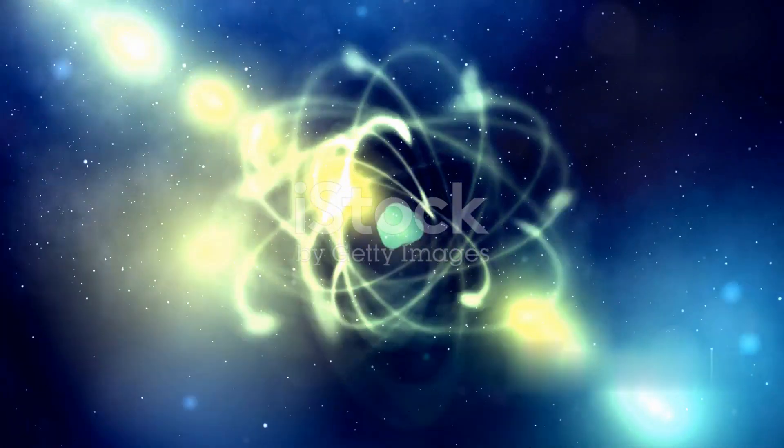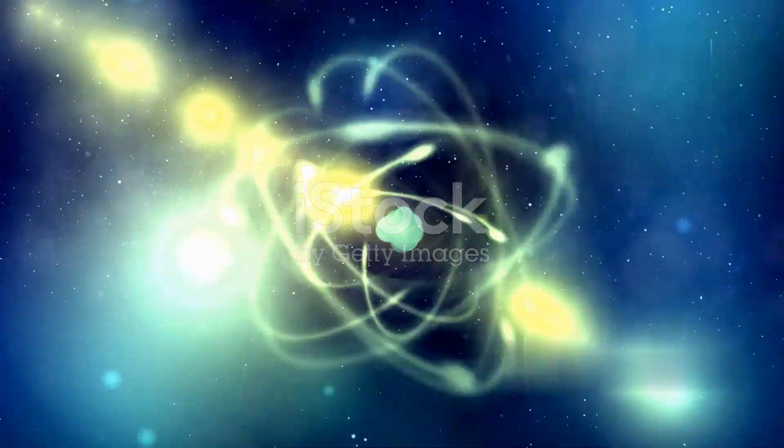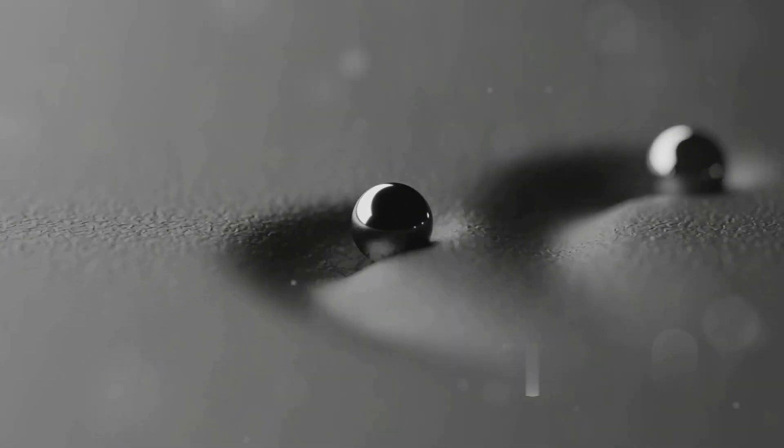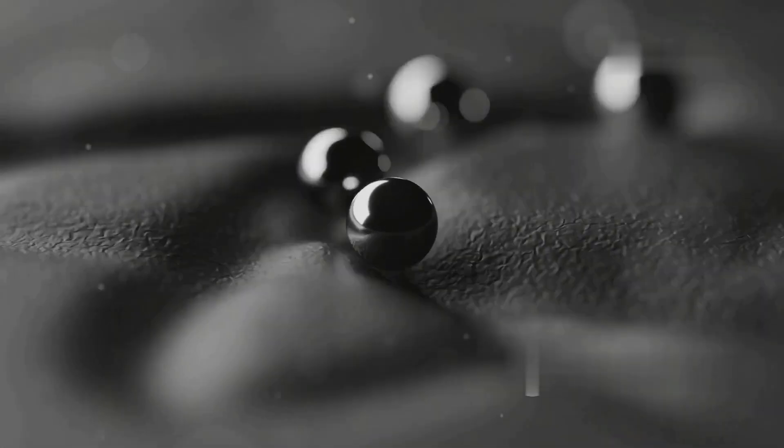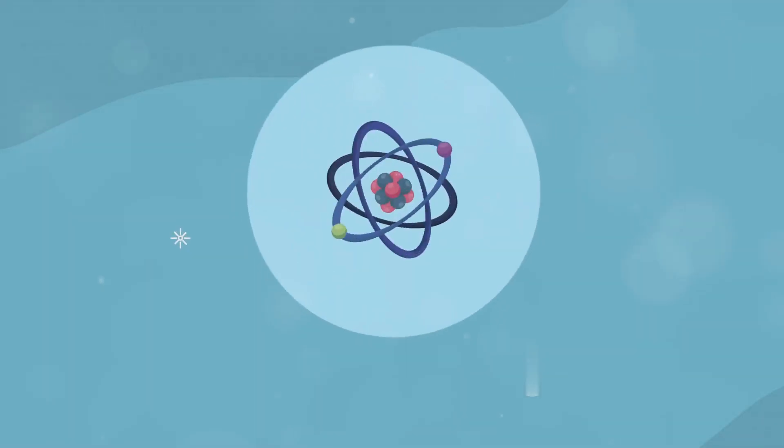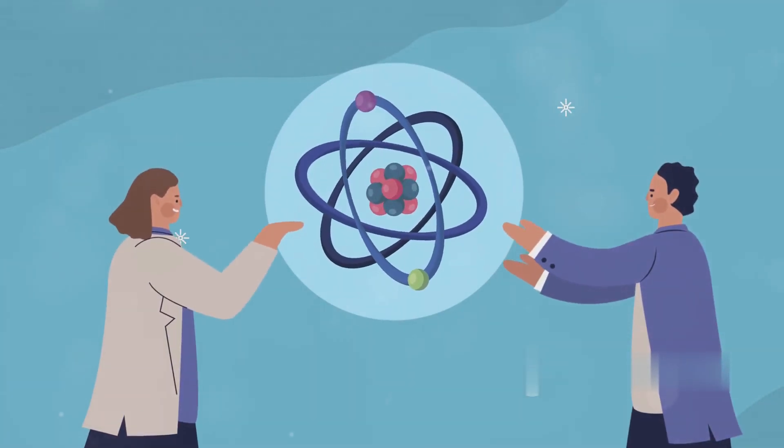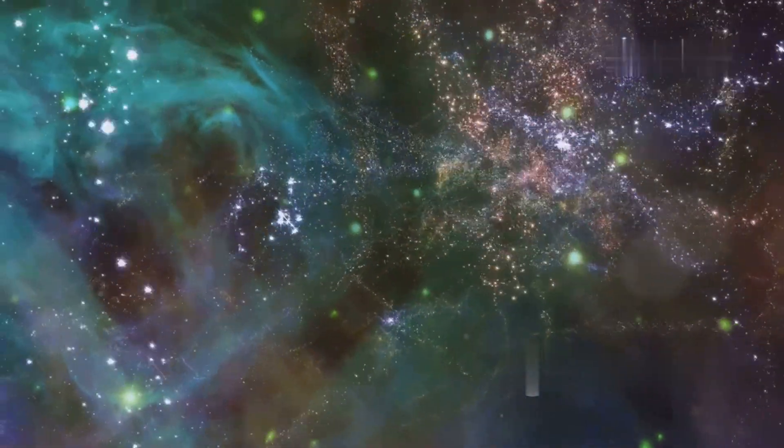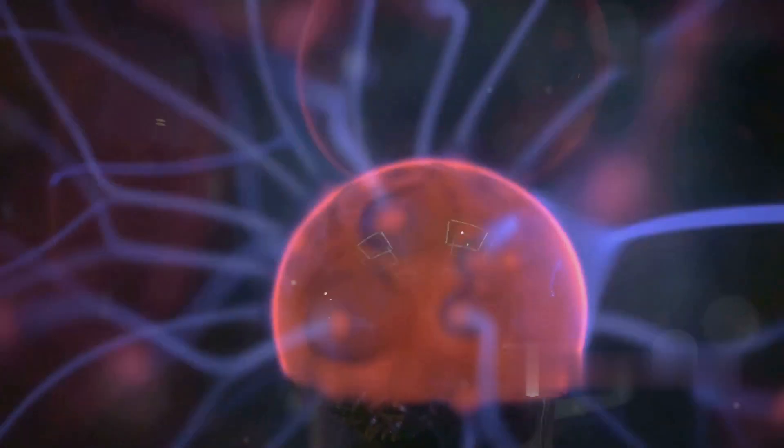Imagine an atom magnified to the size of a football stadium. In the center, like a tiny marble, sits the nucleus, containing protons and neutrons. Electrons, far smaller than grains of sand, whizz around the stadium at incredible speeds. This simplified model illustrates the vast emptiness within an atom. The atom is mostly empty space, challenging our everyday intuition about matter. The solidity we experience is a consequence of electromagnetic interactions between subatomic particles.